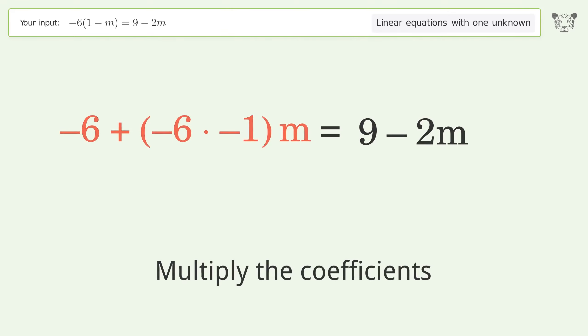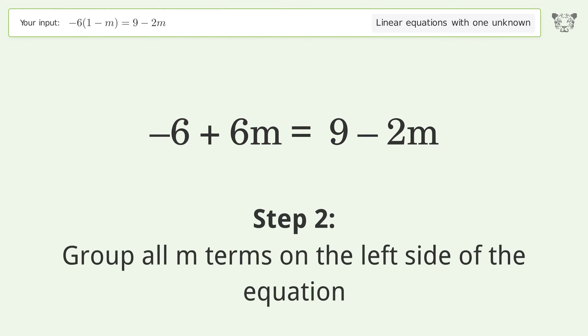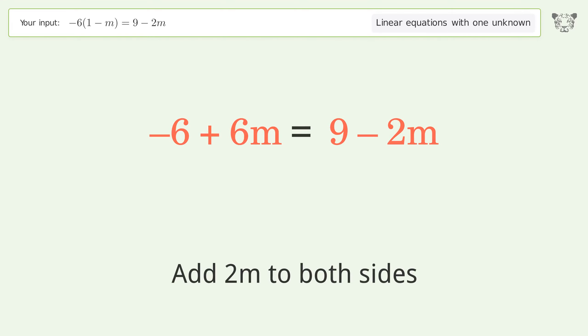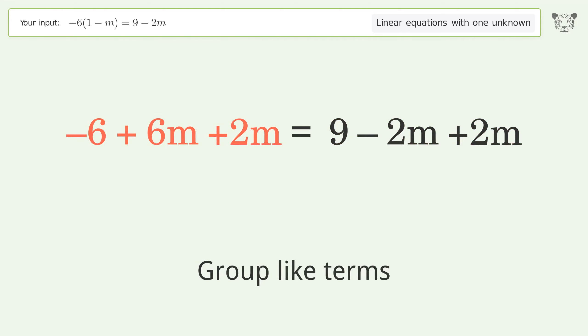Group like terms. Multiply the coefficients. Group all m terms on the left side of the equation. Add 2m to both sides.